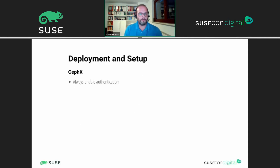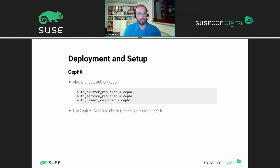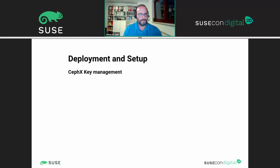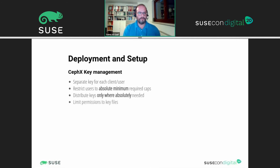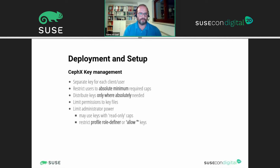Regarding CephX authentication for Ceph, you should always enable it — these are the configuration keys you need for that. Use at least Nautilus as a release — SUSE Enterprise Storage 6 enabled CephX version 2, because the first version has some flaws. For CephX key management: separate keys for each client and user, restrict them to an absolute minimum, distribute keys only where really needed, limit permissions on key files, and limit admin power. You could use read-only caps or restrict the profile role. Admin keys must only be distributed to admin or management nodes.